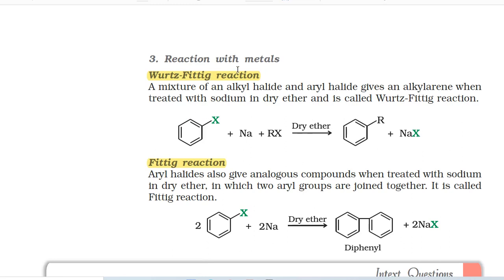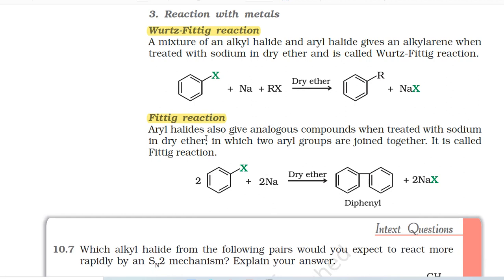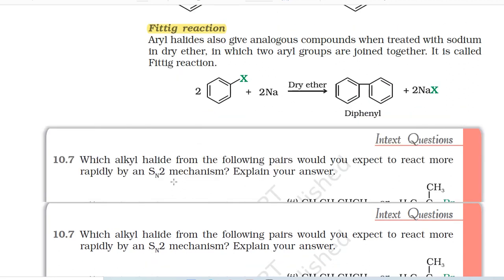Third, reaction with metals. Wurtz-Fittig reaction: A mixture of an alkyl halide and aryl halide gives an alkyl arene when treated with sodium in dry ether. Halobenzene + Na + RX (dry ether) → alkylarene + NaX. Fittig reaction: Aryl halide also gives an analogous compound when treated with sodium in dry ether, in which two aryl groups are joined together.